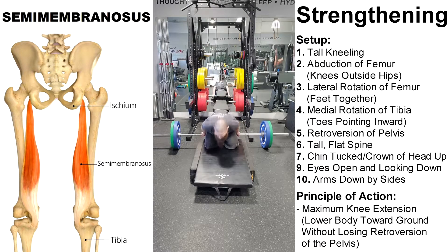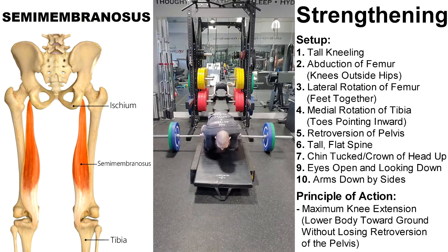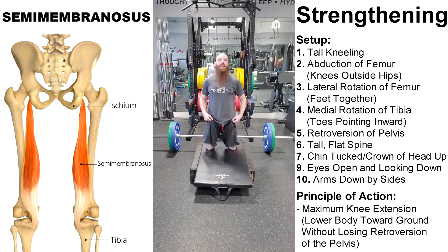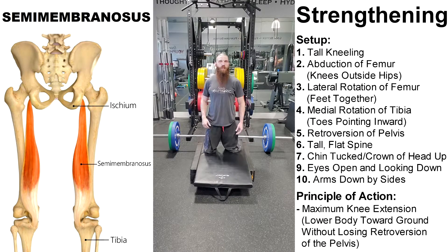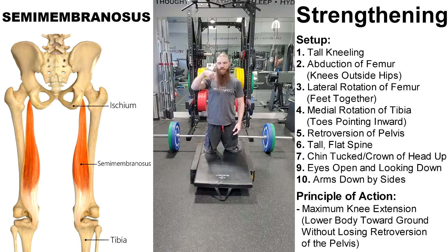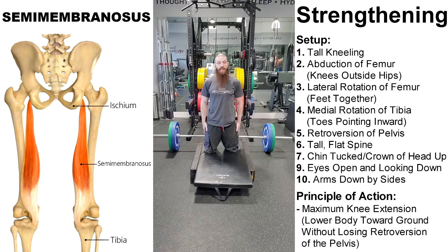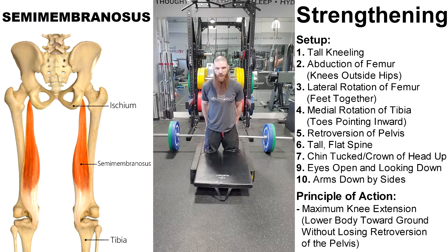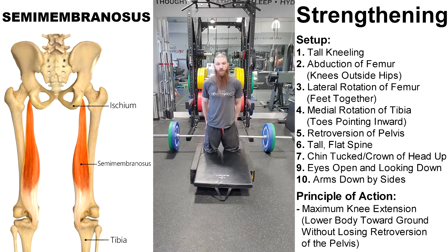Take a weight and place it over your ankles to fix your body, or if you don't have a weight you can use a partner to press down on your ankles. We want a nice tall spine — so retroversion of the pelvis, flat lumbar spine, flat thoracic, chin tucked in, crown of the head up, eyes looking down forward to put the dura mater under tension, with arms down by your side. With the principle of action, we want to go into as much knee extension as possible without losing the retroversion of the pelvis. If we've lost retroversion of the pelvis, then we've gone too far.